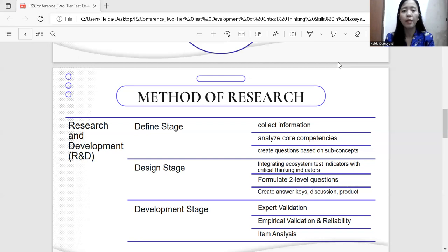The instrument that has been tested by expert validators and approved, then be tested on students to get empirical validation. The sample was 35 students of class 10 science at MAN 1 Bower Situ for the 2021-2022 academic year.